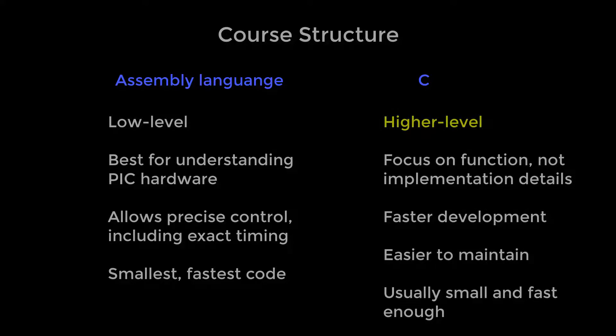C, on the other hand, is a higher level language that allows you to focus more on what your program is doing, instead of the tiny implementation details that the C compiler takes care of for you. C programs are faster to write, because it's easier to express what you want the program to do. And because it's easier to read, it's also easier to maintain, to go back later and make changes.